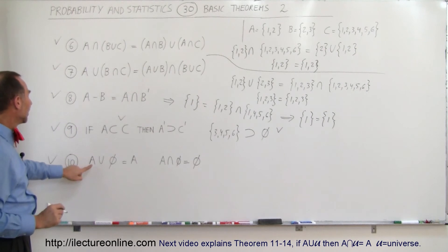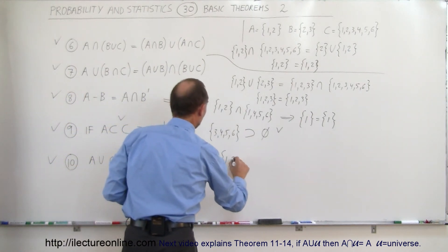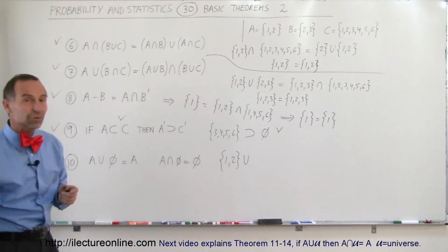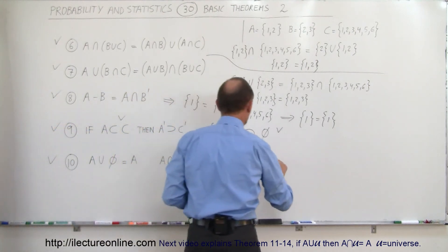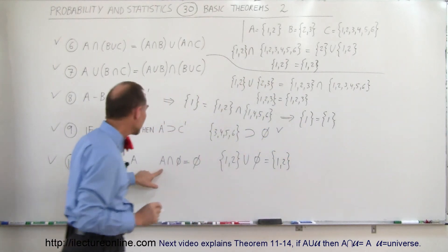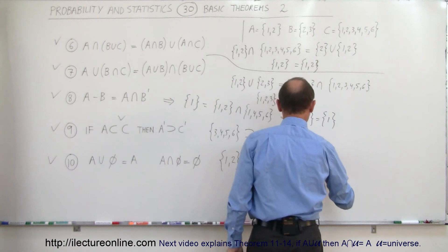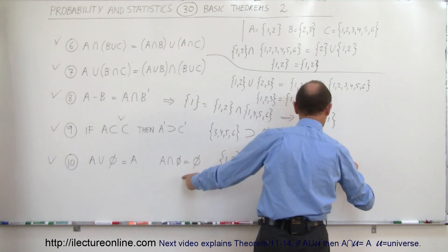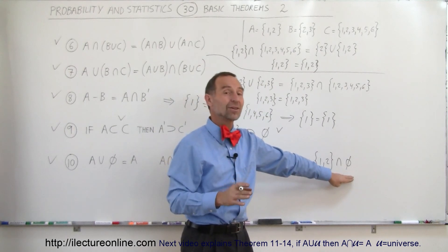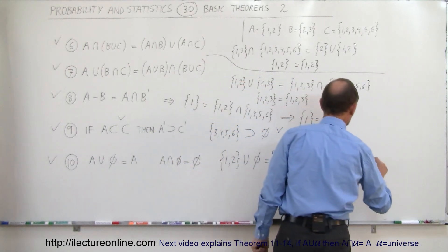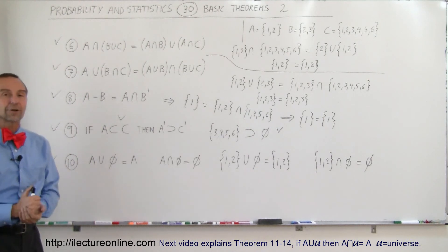Finally, theorem ten: A union the empty set equals A. When we take the union with the empty set, we're not adding any additional outcomes, so it must equal A, which is one and two. Also, A intersected with the empty set equals the empty set. A is one and two; when we intersect with the empty set, we can only take outcomes common to both, and since there are no outcomes in the empty set, there's nothing in common, so the result is also the empty set. That concludes the next five theorems.